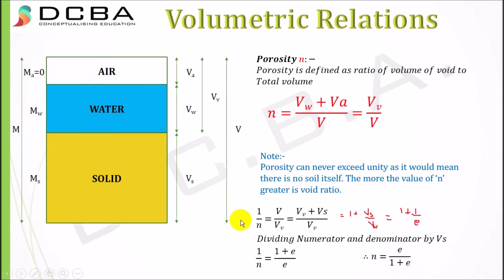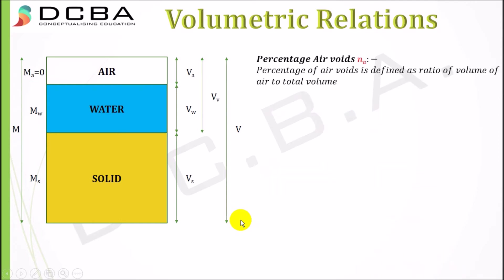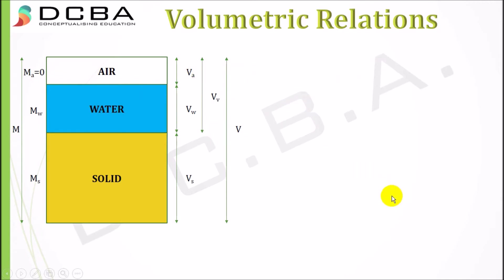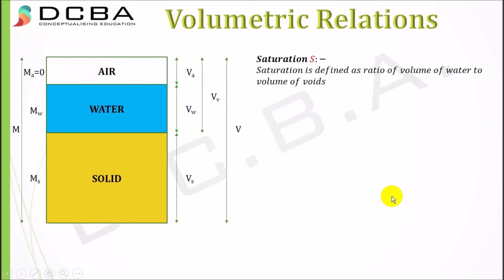Percentage of air voids is defined as the ratio of volume of air to the total volume: Va/V. The percentage of air voids is zero for a fully saturated soil, as we saw in the water puddle example — the whole soil is filled with water, so there is no air volume.